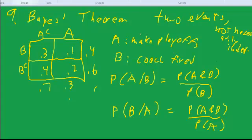The events I've been using in my example are: I'm calling event A, Redskins make the playoffs. Event B, the coach gets fired. And I made up these probabilities: 0.3 for the Redskins making the playoffs, 0.4 for the coach getting fired.